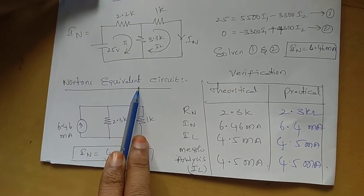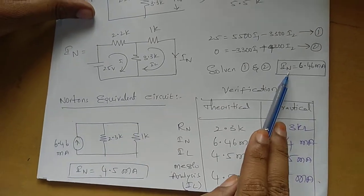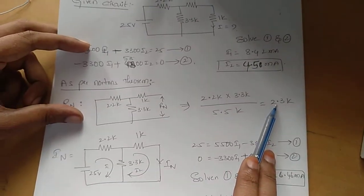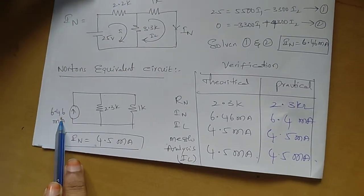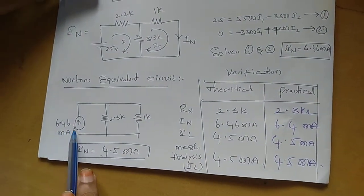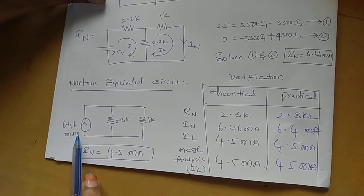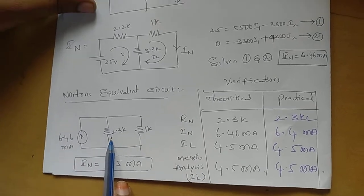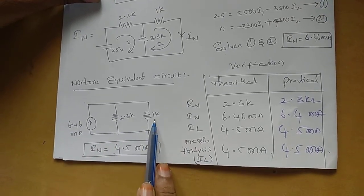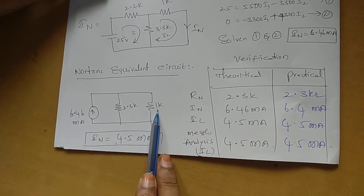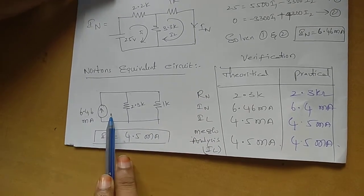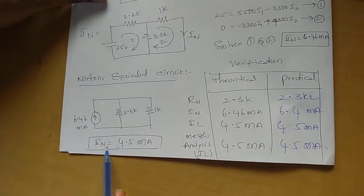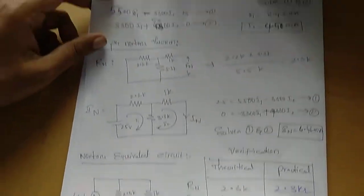The Norton's equivalent circuit is Norton's current source in parallel with a load resistance. This is 4.46 milliampere Norton's current source, and this is R Norton of 2.3 kohms, and this is a load resistance of 1 kohm. If you solve this network using the current division rule, we got I Norton equal to 4.5 milliampere.